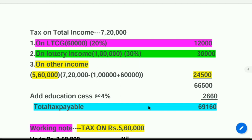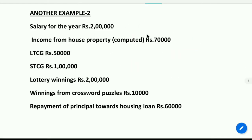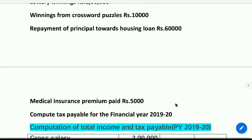Specific heads of income — LTCG, lottery winnings, crossword puzzles — have specific tax rates. Now let us look at another example. Salary for the year Rs. 2,00,000; income from house property (computed) Rs. 70,000; long term capital gain Rs. 50,000; short term capital gain Rs. 1,00,000; lottery winnings Rs. 2,00,000; winnings from crossword puzzles Rs. 10,000; repayment of principal towards housing loan Rs. 60,000; medical insurance premium paid Rs. 5,000. Compute tax payable for FY 2019-20.